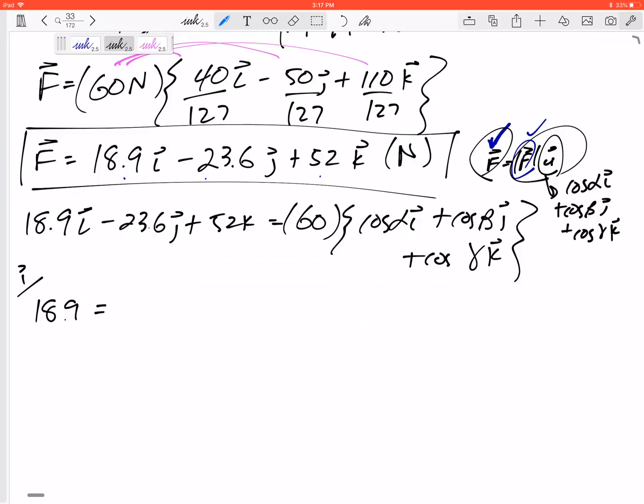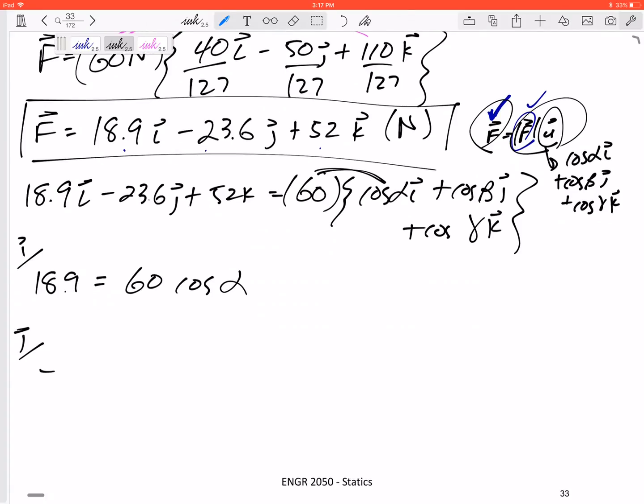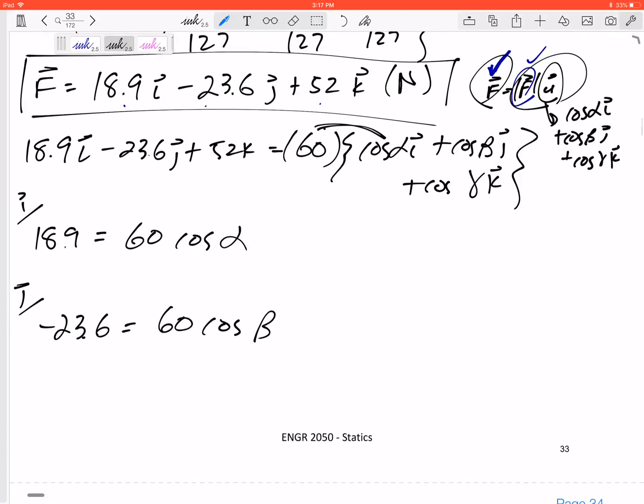So let me equate the I's: 18.9 on the left hand side. All the I's on the right hand side would be 60 cosine alpha. For the J's: negative 23.6 on the left hand side, on the right hand side 60 cosine beta.